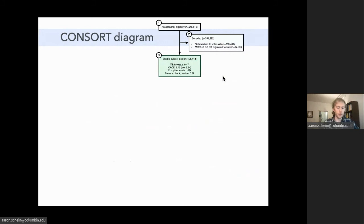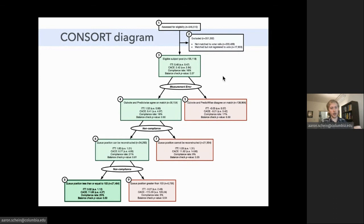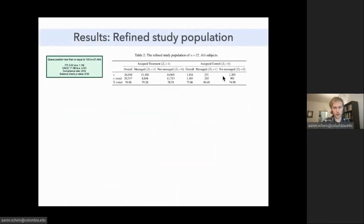I'm including these slides just so that you can look at them. I don't have time to dwell on them too much, but we have a consort diagram in the paper that defines clearly exactly how we refined our study population. So what I just went through in the last few slides is that we first refined the study population based on mitigating measurement error. So we took the 30% of subjects whose matches were the same by both Outvote and PredictWise. And then we refined down to a compliance subpopulation, but one that optimally traded off between the size N and the compliance rate. And we're left with what we're calling the refined study population of about 27,000 subjects.